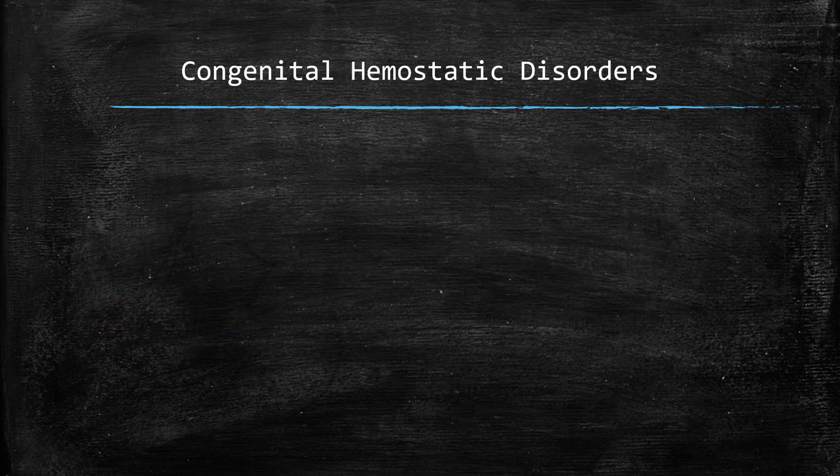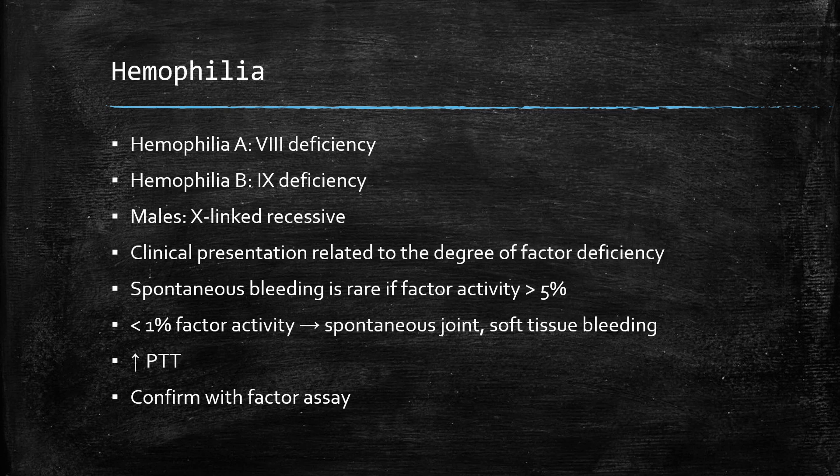As surgeons, we're going to see many patients with bleeding disorders. In the elective or office setting, sometimes we'll make the decision that the risk of bleeding is much worse than the current disease and we have to learn to say no. However, in the emergency or trauma setting, this is likely not an option, and so one of our big responsibilities is learning how to safely prepare a patient with a bleeding disorder for a necessary procedure. There are patients with congenital bleeding disorders that we will be asked to care for from time to time.